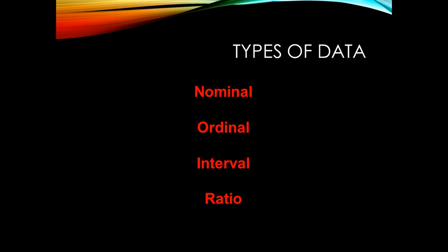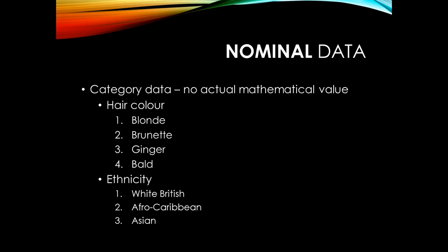The four main types of data used in collecting statistics are nominal, ordinal, interval, and ratio. Nominal data is data in which a number is attributed to a category almost at random, and there is no mathematical value or worth or depth to the number attributed.